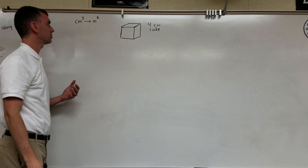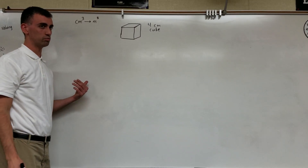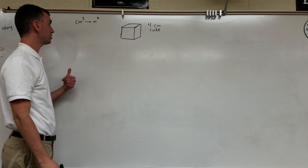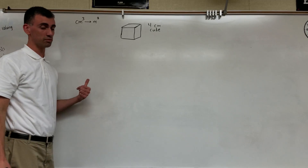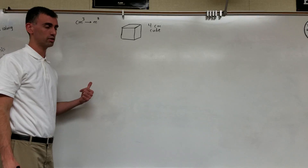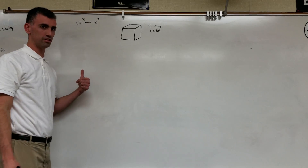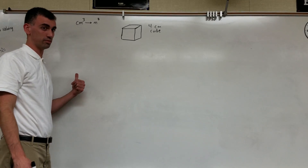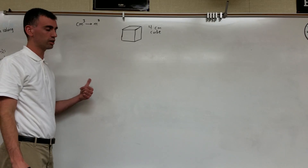You may know that there's 100 centimeters in a meter, but you probably don't know how many cubic centimeters are in a cubic meter — it's not the same. In fact, the guaranteed way to get this problem wrong would be to just say 100 cubic centimeters to a cubic meter.